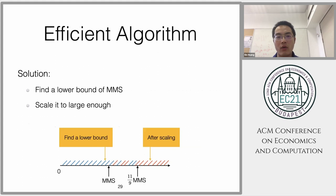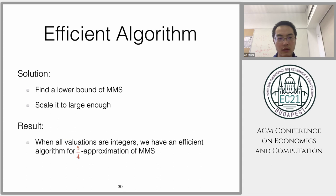To solve this problem, we try to find the lower bound by testing algorithm of the maximum share, then we scale this lower bound large enough to make sure that it always returns yes. With this kind of idea, we get an algorithm for 5/4 approximation.